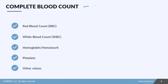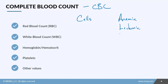Another very common lab test you'll see is the Complete Blood Count, or CBC. It gives you an idea of what's going on with your patient's cells. You can check for things like anemia, leukemia, possibility of infection, or even inflammation.